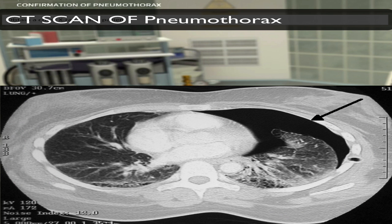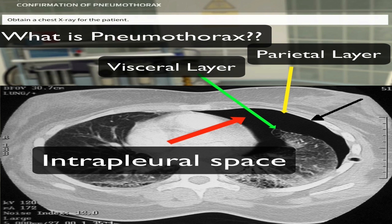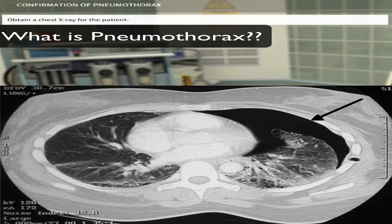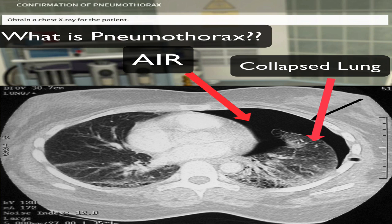On the screen now you have a CT scan of a pneumothorax and I've labelled the different parts. On the right you can clearly see the black space is where the air is filled, and you can see the lung collapse compared to the other side — this is one way of confirming a pneumothorax.